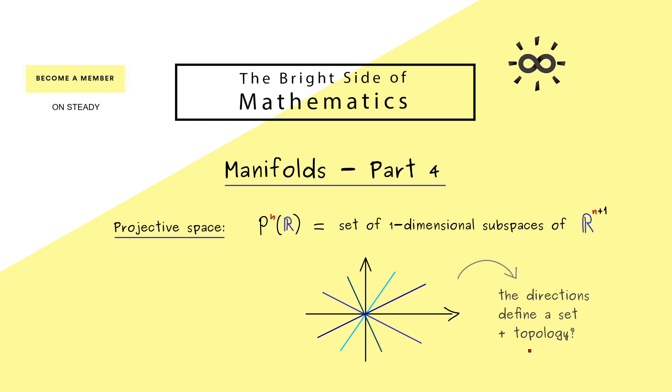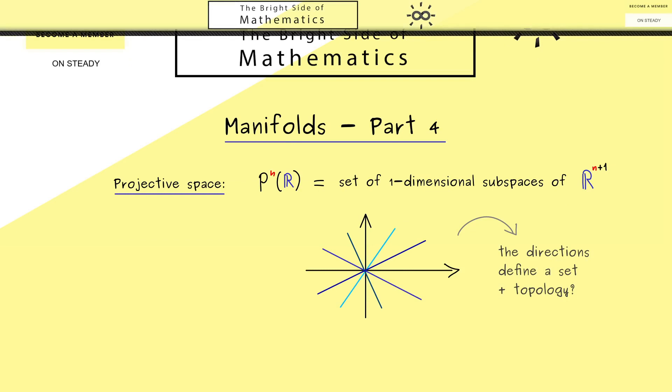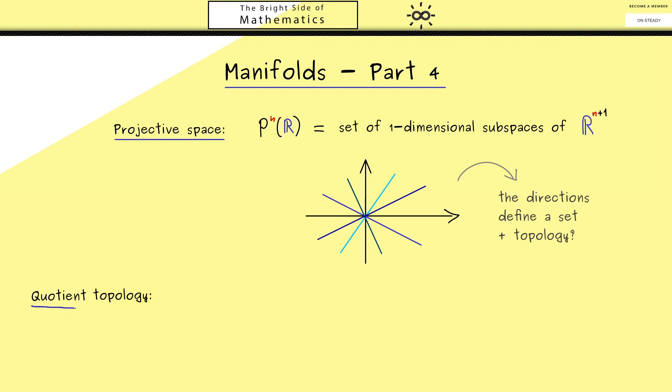Now the question is which one should it be and how do we define it? Obviously this topology here should have something to do with the original topology on R^(n+1). So you see, this is a general problem. How do topologies induce new topologies? Indeed, this question leads us to the notion of a quotient topology.